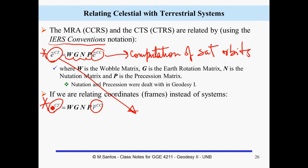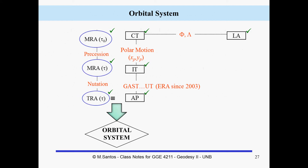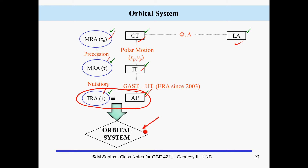We have done all that — we talked about the LA system, CT, IT, AP, the mean right ascension systems — and we have made the connection through the system of apparent places. Let's now talk about the orbital system.